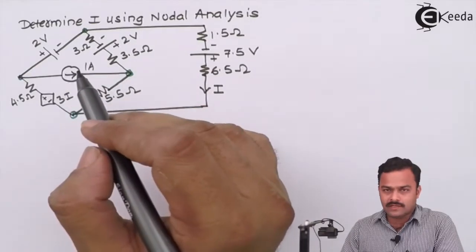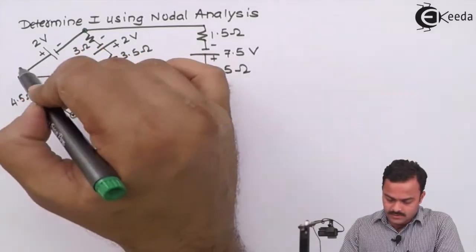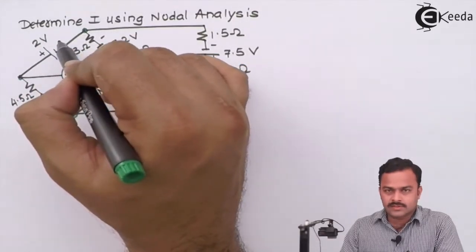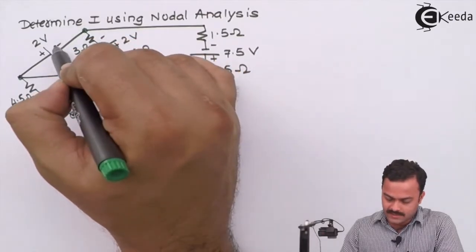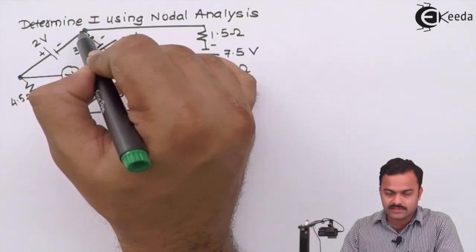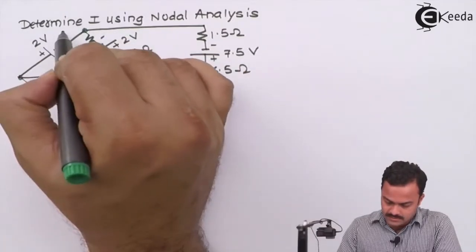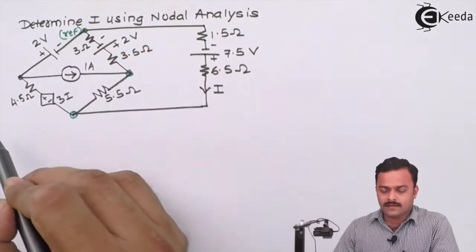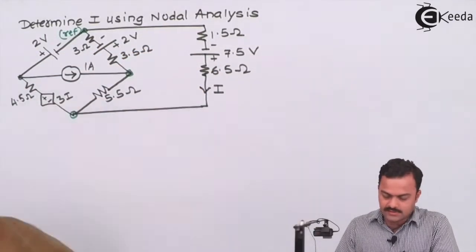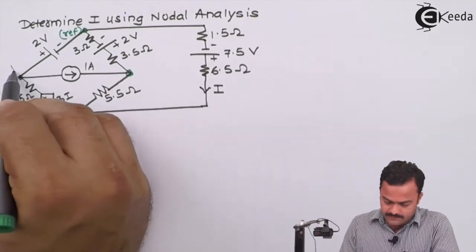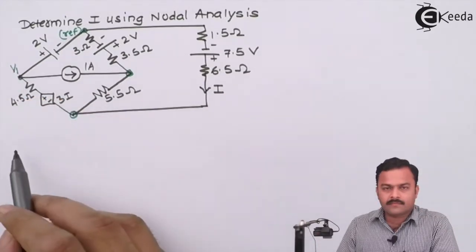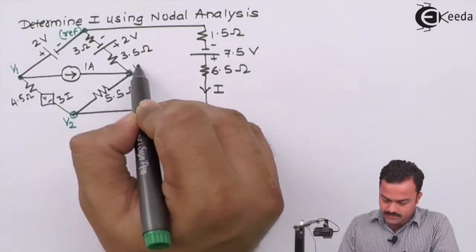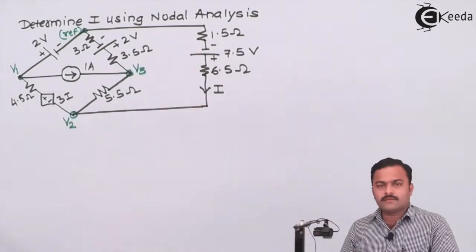Now, selection of the reference node. If you see carefully, between these two nodes there is only a voltage source present. So it is always better to select the negative terminal of the voltage source as a reference. This is our reference node. Then node number one has potential v1, node number two has potential v2, and node number three has potential v3.